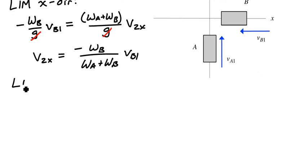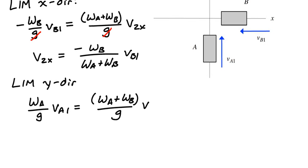Applying the linear impulse momentum equation in the y direction, initially I have the mass of A, so WA divided by g, times VA1. Post-impact, I have the mass of the total system, the weight of A plus the weight of B divided by g, times what I'll call V2y.